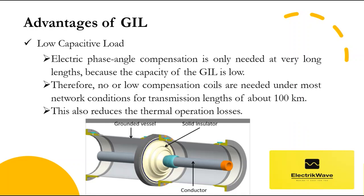GIL has low capacitive load. Electric phase angle compensation is only needed at very long lengths, because the capacitance of the GIL is low — typically 55 microfarad per kilometer. Therefore, no or low compensation coils are needed under most network conditions for transmission lengths of about 100 kilometers. This also reduces the thermal operation losses.